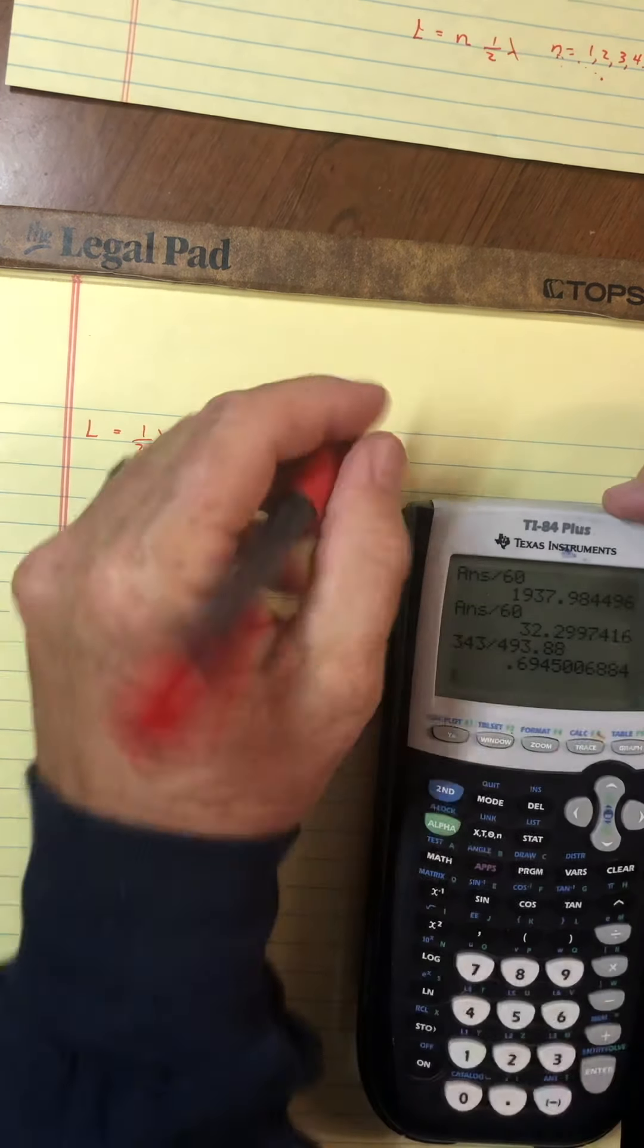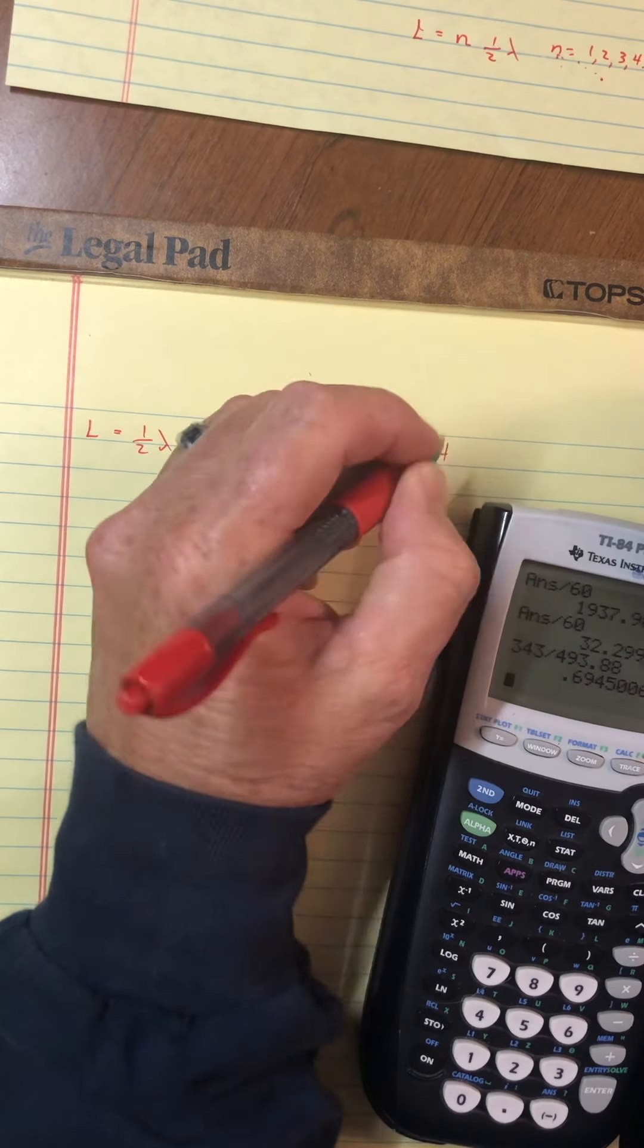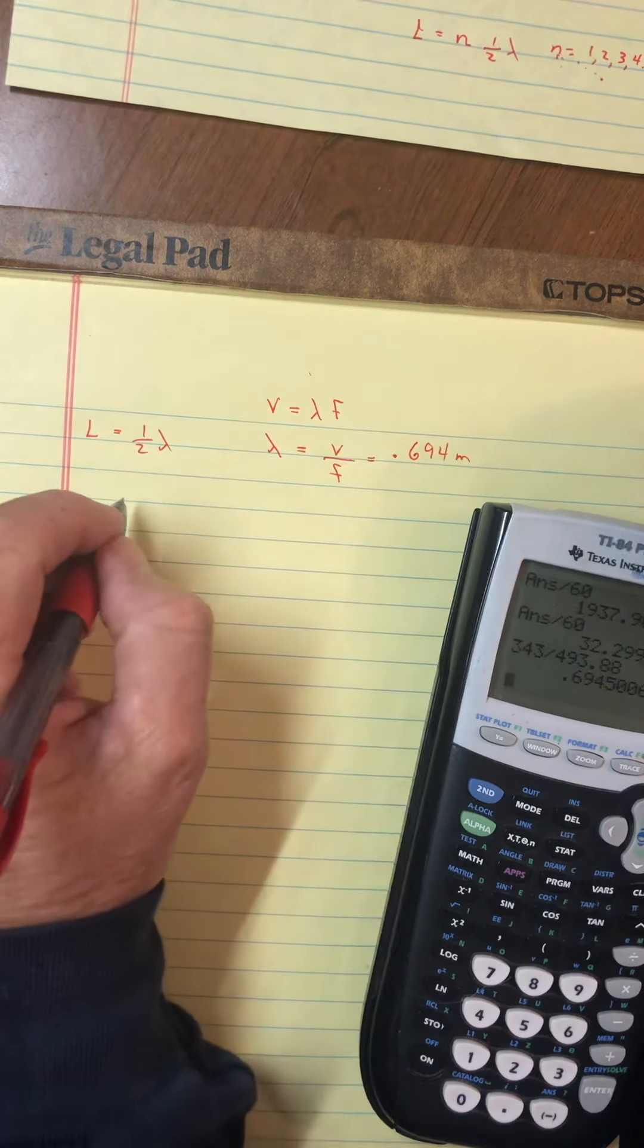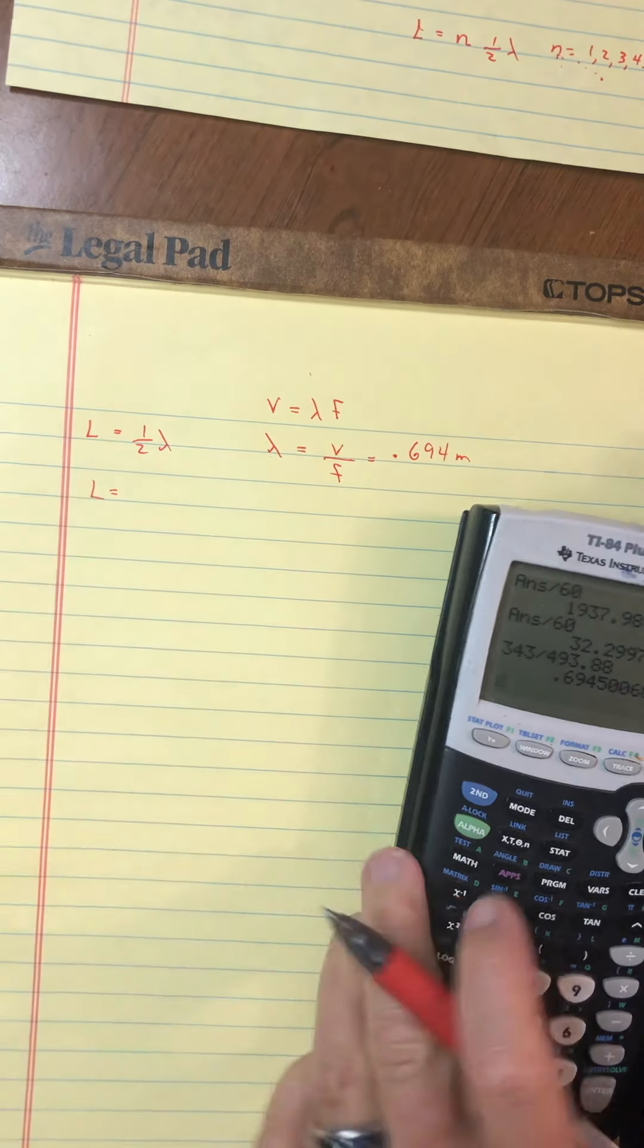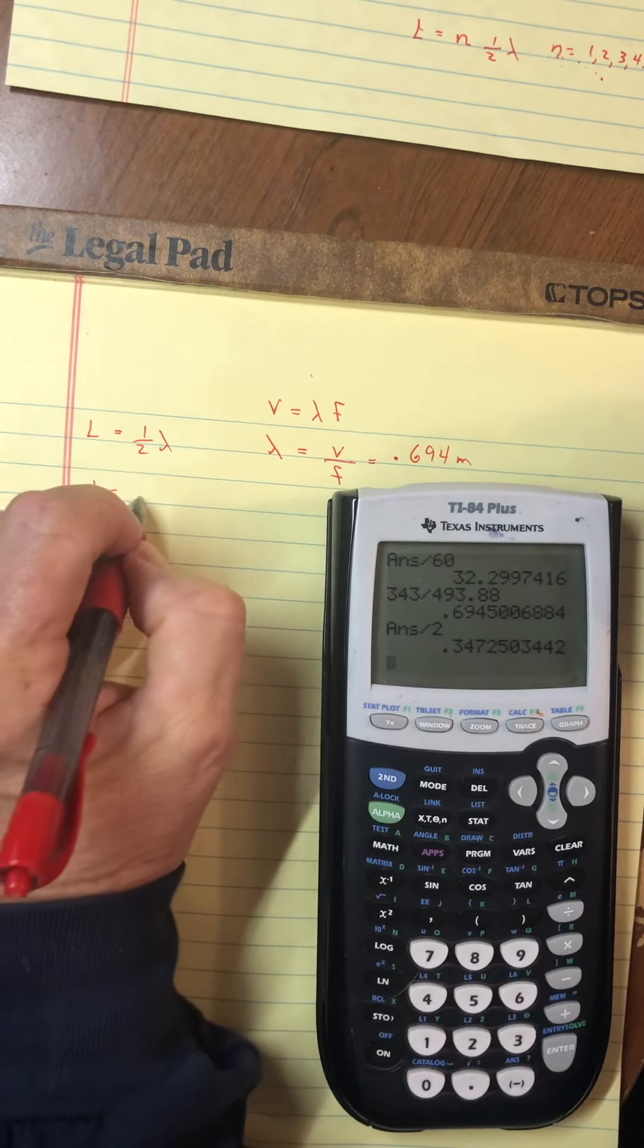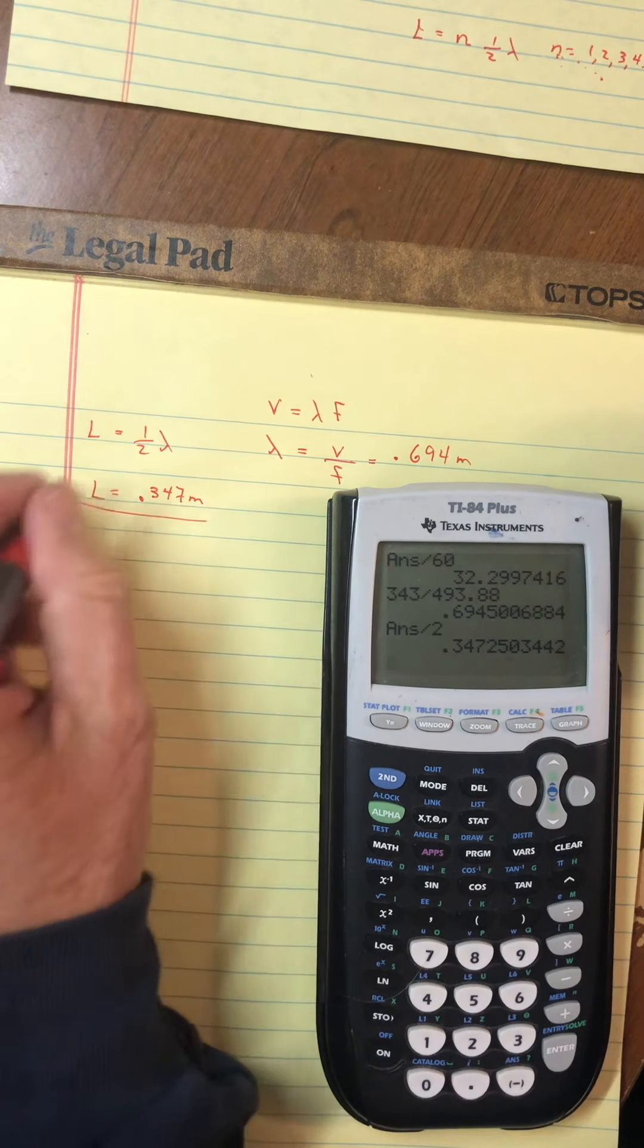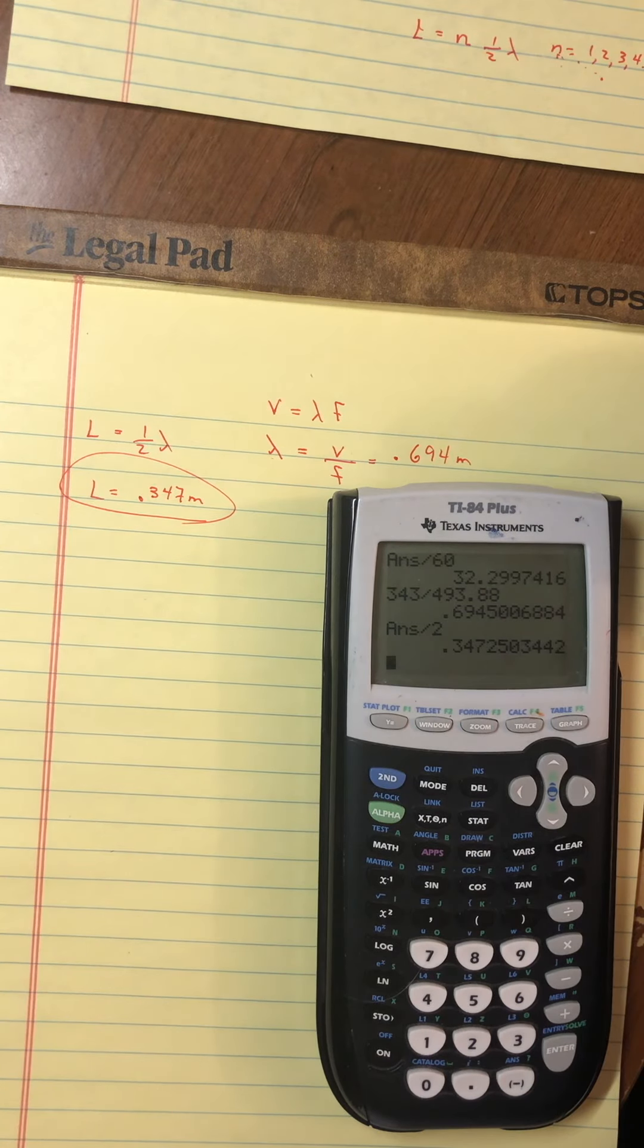dividing it by the frequency of the 493.88, you get a wavelength of 0.694 meters, and so the length of the pipe is then half of that at 0.347 meters. Yay! So, there's the problem.